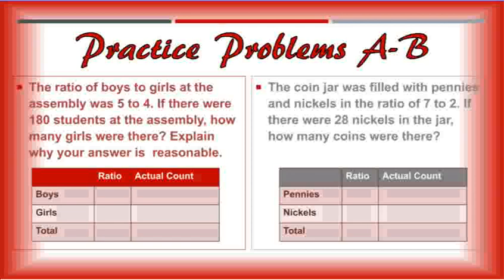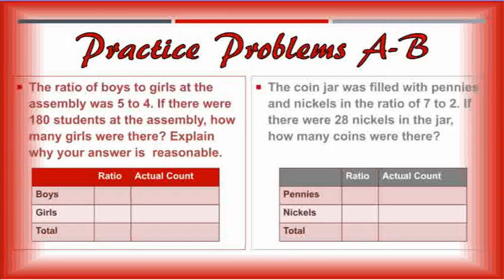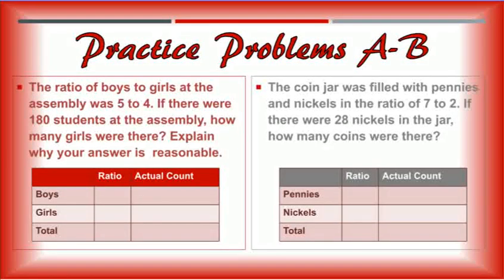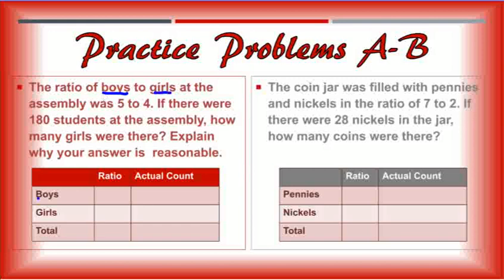We've got a couple other ones here. The ratio of boys to girls at the assembly was 5 to 4. If there were 180 students at the assembly, how many girls were there? Explain why your answer is reasonable. Now, when I set up my ratio boxes, I keep the order that they have in. So boys to girls. So I wrote it boys to girls here with the total on the bottom. So if they said boys to girls was five boys to four girls, that's a total in the ratio of nine. There were 180 students in the assembly. That's the total. 180 here.